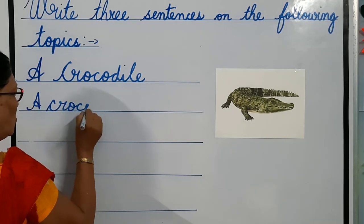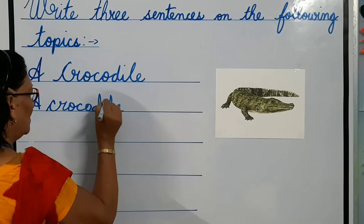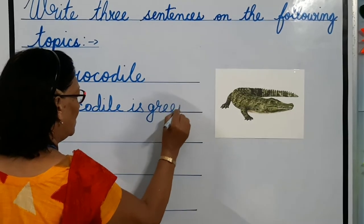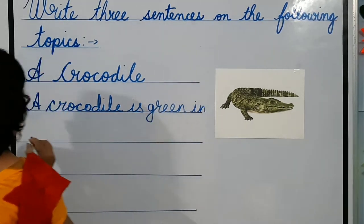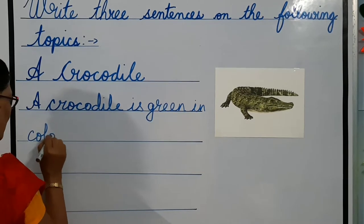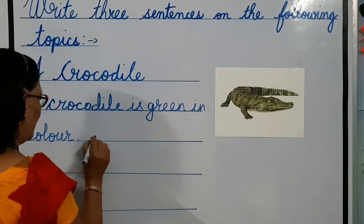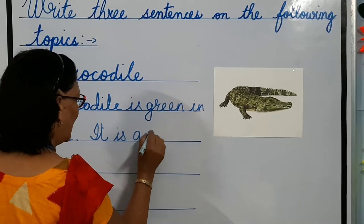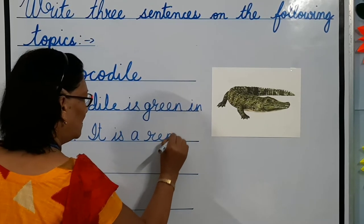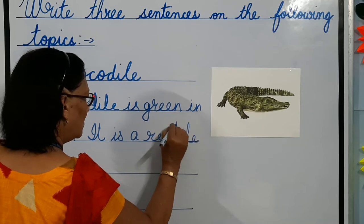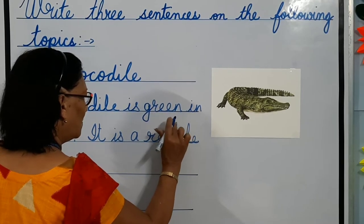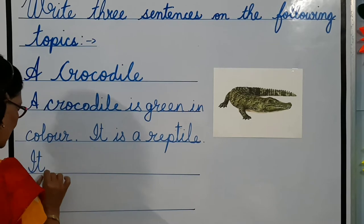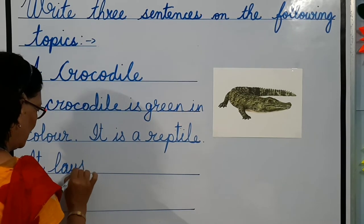A crocodile is green in color. It is a reptile. It lays eggs.